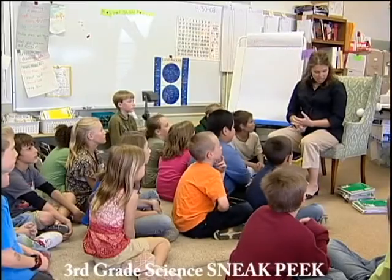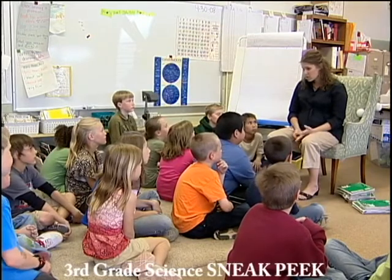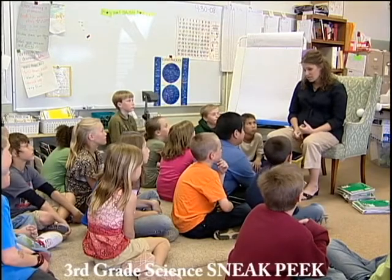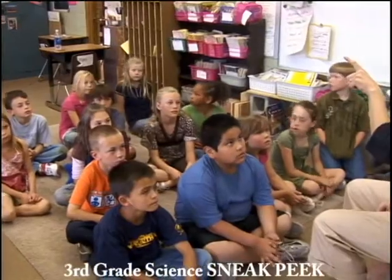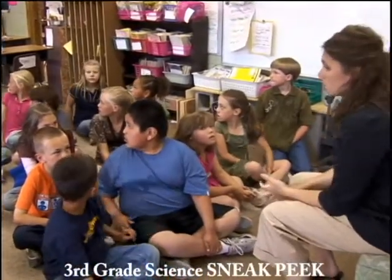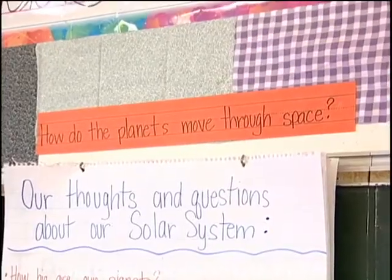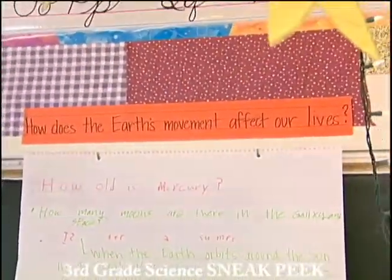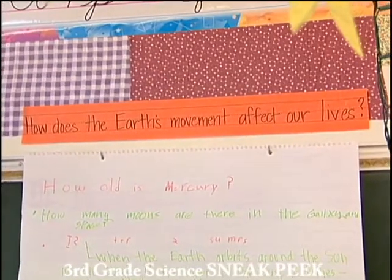We've been talking about space for a few days, and we're going to focus on two questions today. We have a list of all of our questions on the backboard. The orange sentence strips over there — those are the two questions we're focusing on today: How do the planets move through space? And Olivia, can you see the second question? How does the Earth's movement affect our lives?